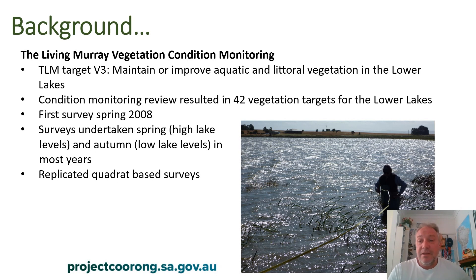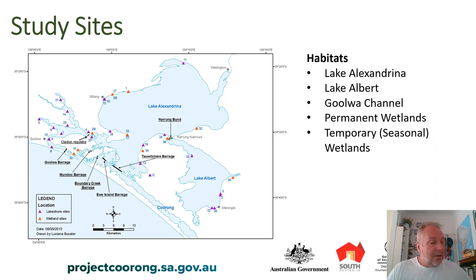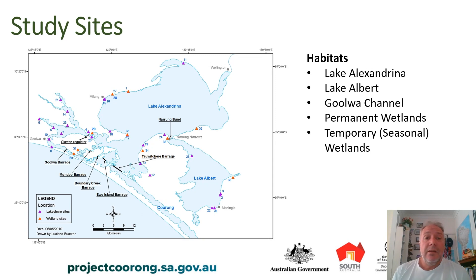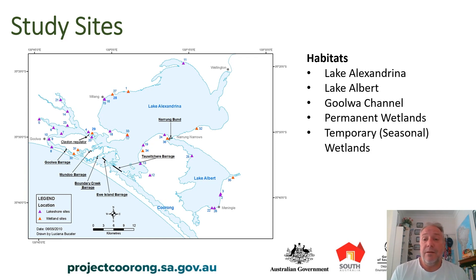This photo shows a silhouette of me on a quite windy day, struggling to set out a quadrat using a measuring tape. This slide shows the location of the monitoring sites. To assess the targets, we split the lower lakes into five different habitats: Lake Alexandrina, Lake Albert, Goolwa Channel — the area between the Clayton Regulator and Goolwa Barrage including the lower reaches of the Finnis River and Currency Creek — permanent wetlands that always have water in them, and temporary wetlands that are connected in spring and dry out over summer and autumn.